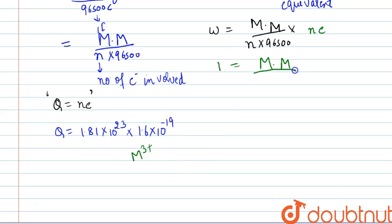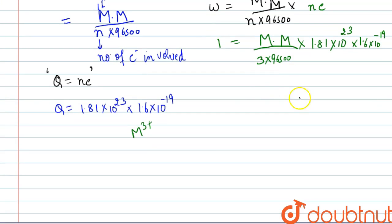It will be molar mass by 3 × 96500 × the value of n is 1.81 × 10²³ × 1.6 × 10⁻¹⁹. From here we will calculate the value for the molar mass. It will be 3 × 96500 divided by 1.81 × 1.6, and we will solve this 10²³ minus 19, it will be 10⁴.